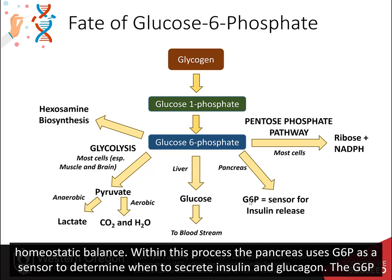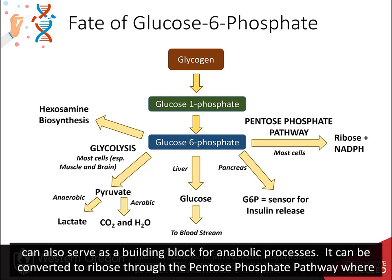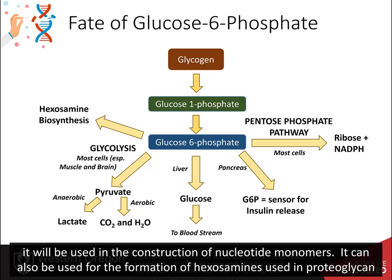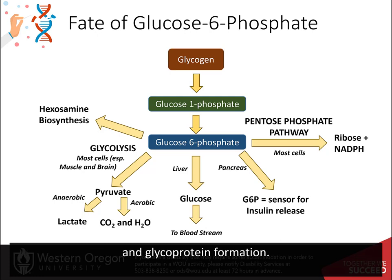Glucose 6-phosphate can also serve as a building block for anabolic processes. It can be converted to ribose through the pentose phosphate pathway, where it will be used in the construction of nucleotide monomers. It can also be used for the formation of hexosamines used in proteoglycan and glycoprotein formation.